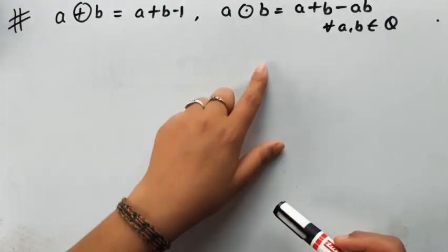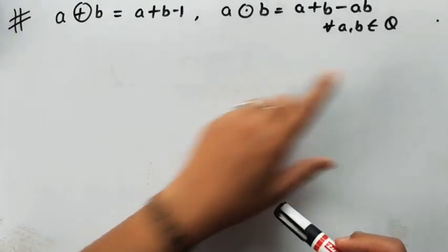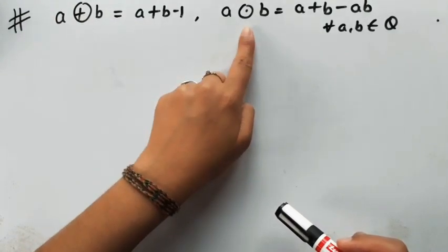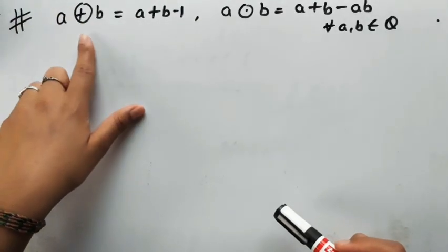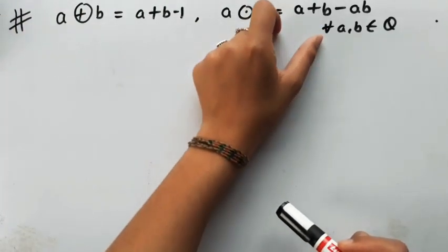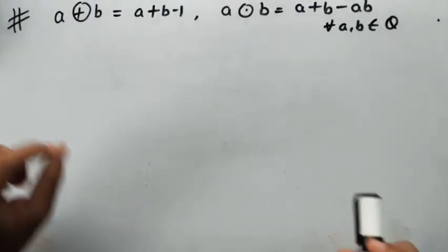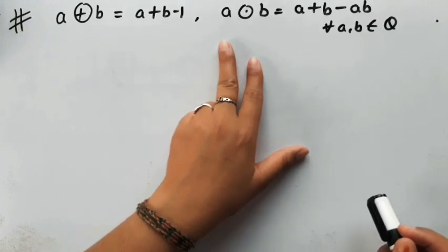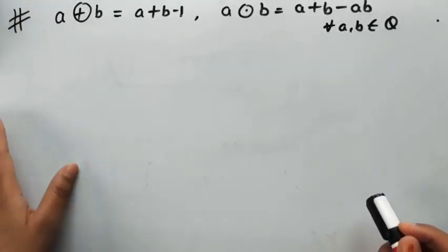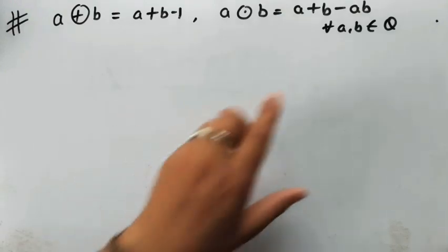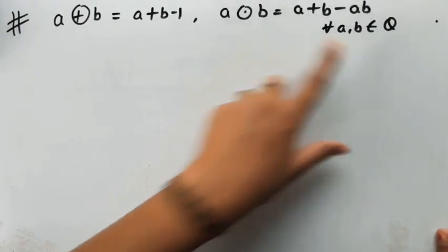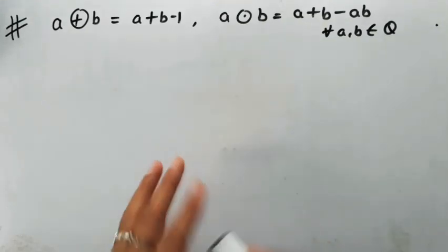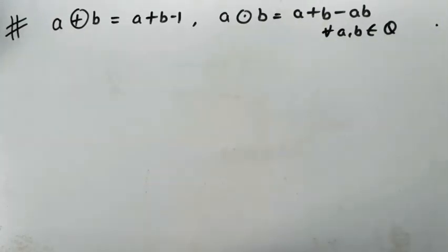The question is: given the set of all rational numbers Q with two compositions defined — one composition for addition and another for multiplication. Under addition it is defined as a⊕b = a+b-1, and under multiplication it is defined as a·b = a+b-ab. We have to prove that the set of rational numbers under these two binary operations forms a ring, which means we need to check all eight properties.